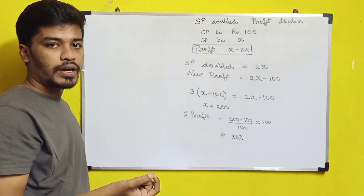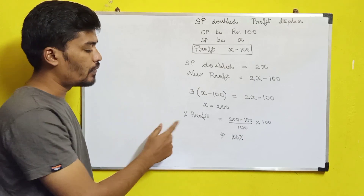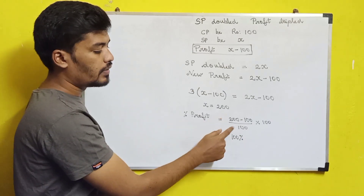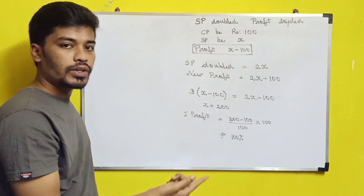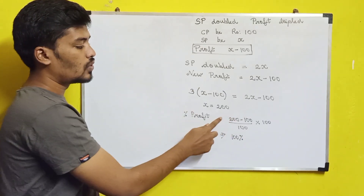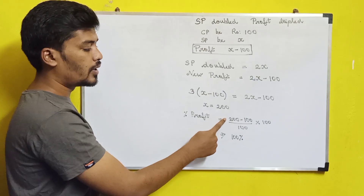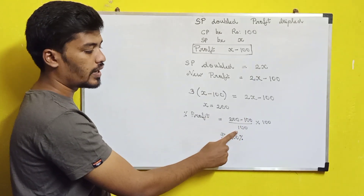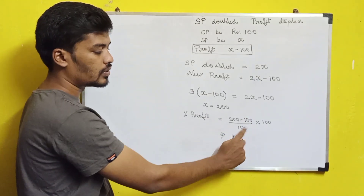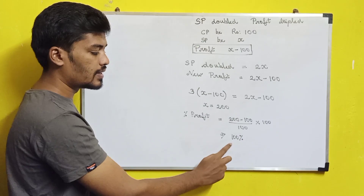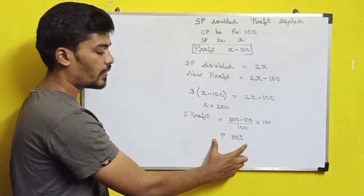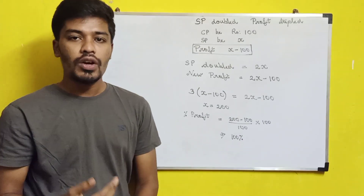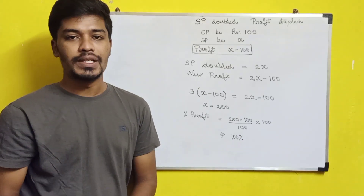So we have the profit percentage. Profit percentage equals selling price minus cost price, divided by cost price, multiplied by 100. So 200 minus 100 divided by 100 into 100 — the 100s cancel, and we get the profit percentage as 100 percent.